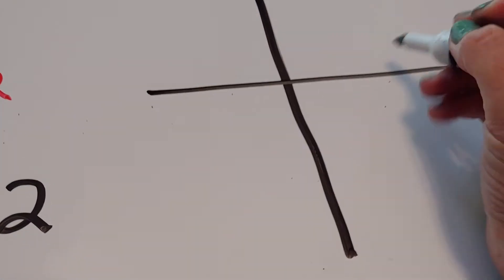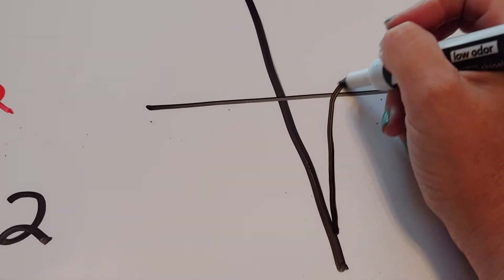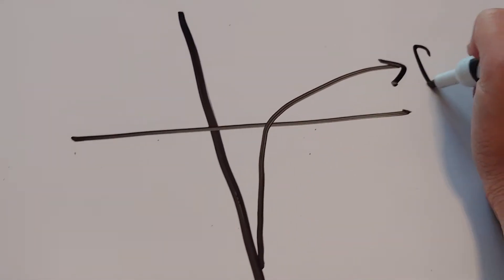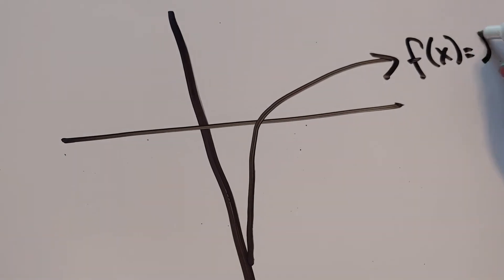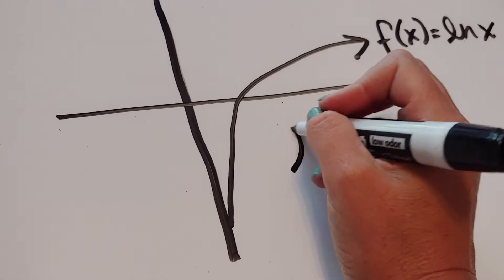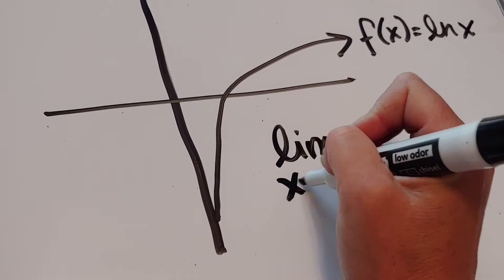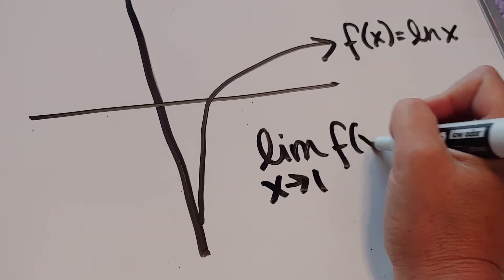So, if I was to do another graph, and let's say that I did the natural log of x. And let's say this time I want to find the limit as x approaches 1 of this function.